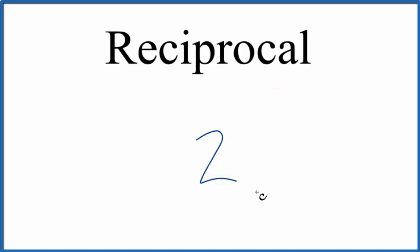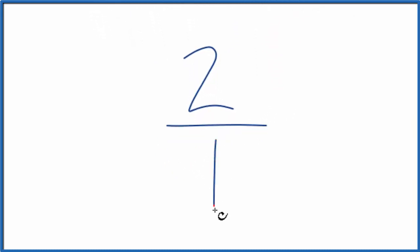So first off, instead of 2, let's call this 2 over 1. Because 2 divided by 1, it's still 2.